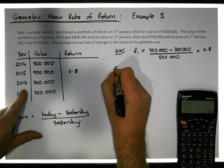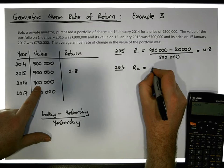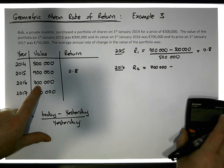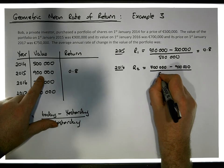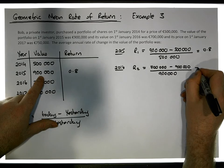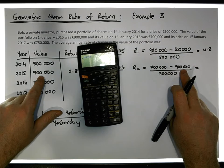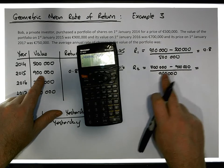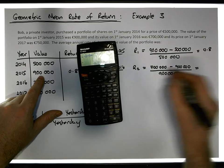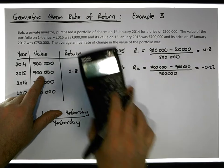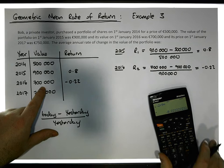What about in 2016? Let's call this R2. Well, 2016's price is €700,000 minus yesterday's, which is €900,000, relative to yesterday's, which is €900,000. That gives us €700,000 minus €900,000 equals minus €200,000, divided by €900,000 — the same as minus 2 divided by 9 — which gives us a value of minus 22%. So there was a 22% decrease in the value of the portfolio; R2 was minus 0.22.